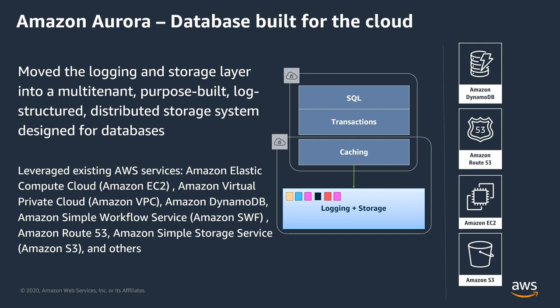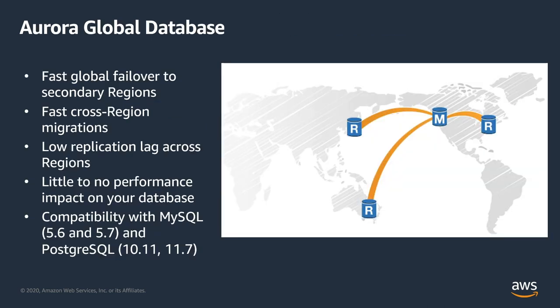Aurora can take advantage of other AWS native services as well — for example, EC2, VPC, S3, Route 53, and more right out of the box. Amazon Aurora global database is a feature designed specifically for globally distributed applications, allowing a single Amazon Aurora database to span multiple AWS regions.